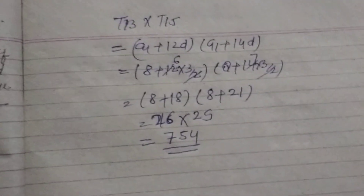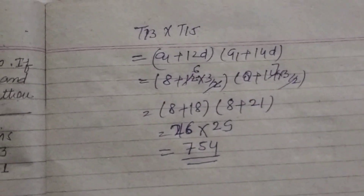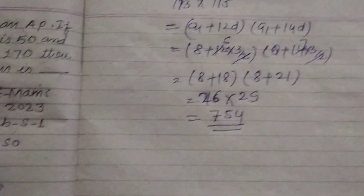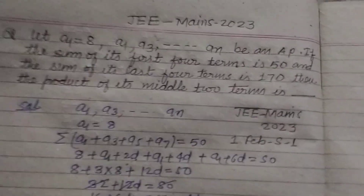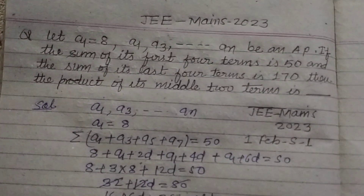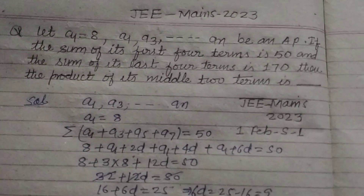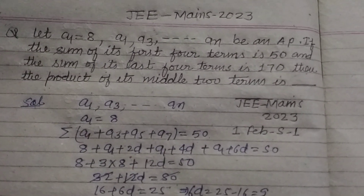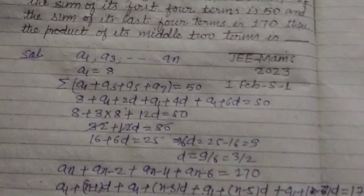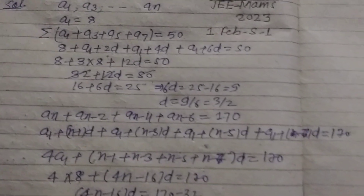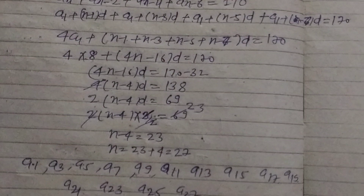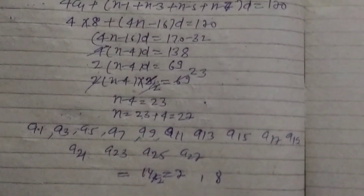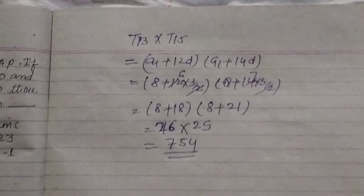So the product of the two middle terms is 754. We solved the problem by showing each step clearly. Please like the video and subscribe to the channel. Thanks for watching.